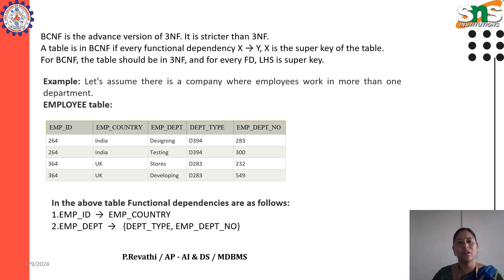For BCNF, the table should be in third normal form, and for every functional dependency, the left-hand side must be a super key.